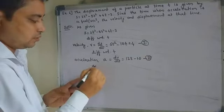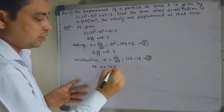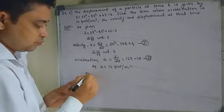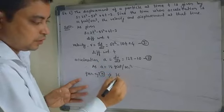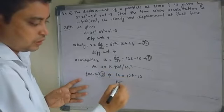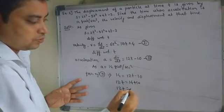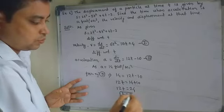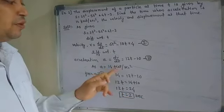As given, acceleration a = 14 feet per second squared. Putting this into equation 2: 14 = 12t − 10, so 12t = 14 + 10 = 24, therefore t = 24/12 = 2. So at t = 2 seconds, the acceleration will be 14 feet per second squared.